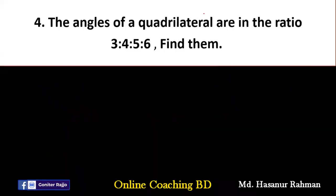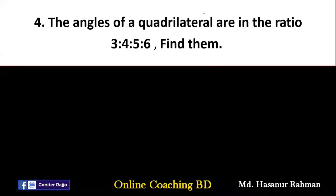Now number 4. Numbers 3 and 4 are similar, but in number 4 the angles are given in a ratio. The angles of a quadrilateral are in the ratio 3:4:5:6. Find them. We can solve in a similar way.